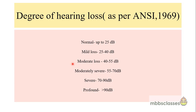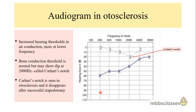The degree of hearing loss is based on the hearing thresholds of the respective ear. Normal is up to 25 dB. Mild loss is from 25 to 40 dB. Moderate loss is from 40 to 55 dB. Moderately severe is from 55 to 70 dB. Severe loss is between 70 to 90 dB, and profound loss is when the loss is more than 90 dB.